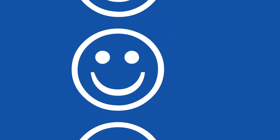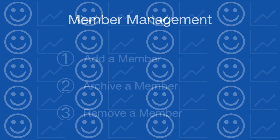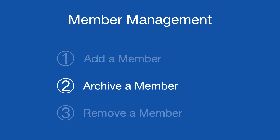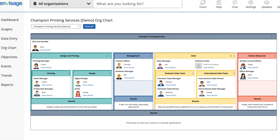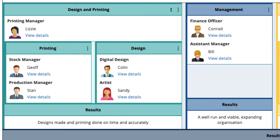At Envisage, we don't charge by user, which means you can easily add your entire team and get them all using the app so everyone can help your business grow. In this video, we are going to discuss member management: how you can one, add a member; two, archive a member; and three, remove a member. It's important to note that to use objectives you need an org chart with your team assigned to their posts, and to do that you need to add your team to Envisage.